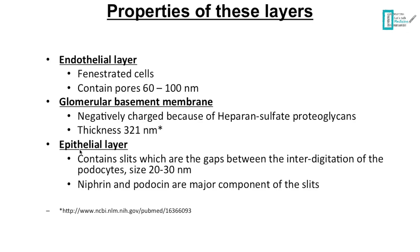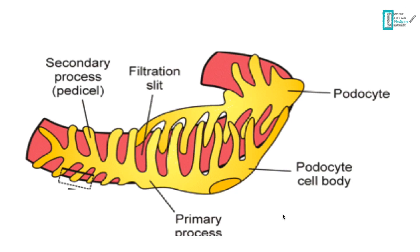Now we have the epithelial layer of the Bowman capsule. The Bowman capsule contains two layers, the inner and the outer one. The inner one contains a special type of cell called podocytes. The podocytes contain processes that are interdigitating each other, creating between them what we call slits. The component of these slits is podocin and nephrin. The tip of these processes is attached to the glomerular basement membrane, and some diseases can originate from this site.